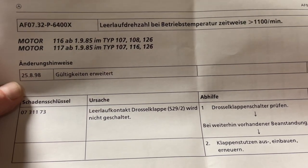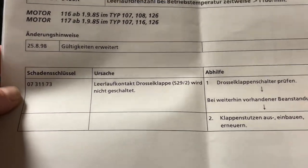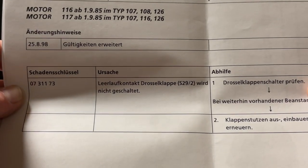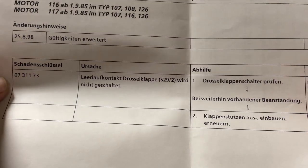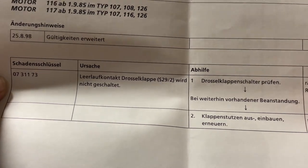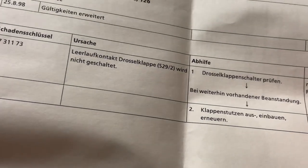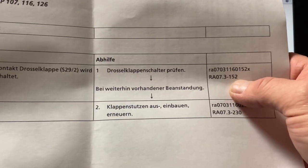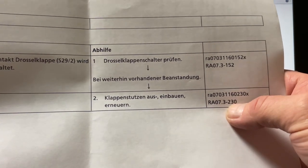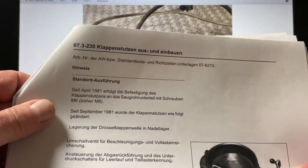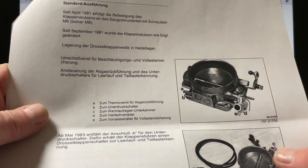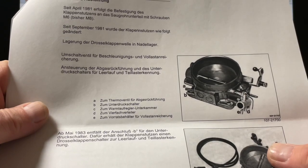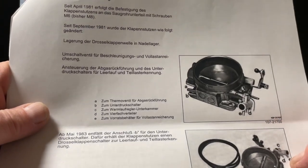Basically what they're saying is to test the switch on the throttle body, the throttle switch. Then if that doesn't fix it, if you can't find the problem, they suggest to replace the actual throttle body. Then they have on the side RA 7.3152 and RA 7.3230. These are the sections in the manual under group 7.3. 3152 is the Klappenstutzen, the throttle body. Even though I put in the 129.039 model, they referred me to the older 3.8152 500 version of the 126. That's the throttle body you're looking at.